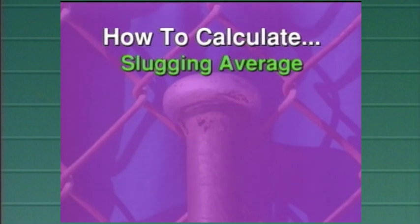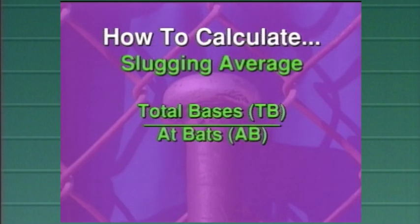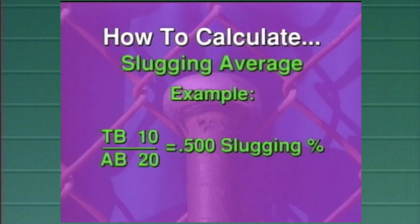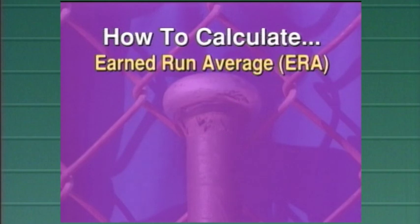The slugging average is calculated by taking the total bases and at bats. You divide the at bats into the total bases. For a single, you would get one base, a double two, and so on. The 20 at bats divided by the 10 total bases is how you come up with a .500 slugging percentage.